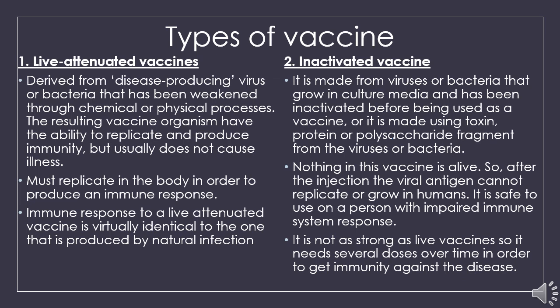Inactivated vaccine consists of virus particles, bacteria, or other pathogens that have been grown in culture and then lost their disease-producing capacity. After introduction of the vaccine, the antigen cannot replicate or grow in humans, so it is safe to use on persons with impaired immune systems. However, it is not as strong as live vaccines, so it needs several doses over time to achieve immunity.